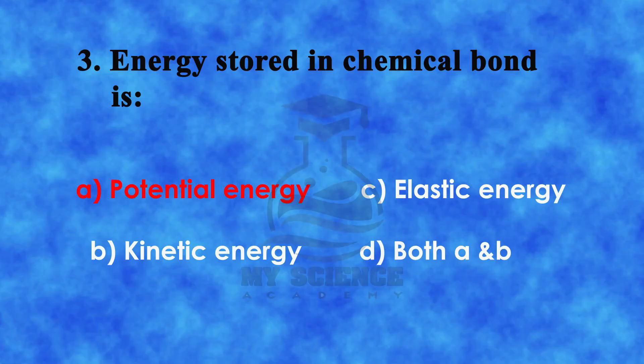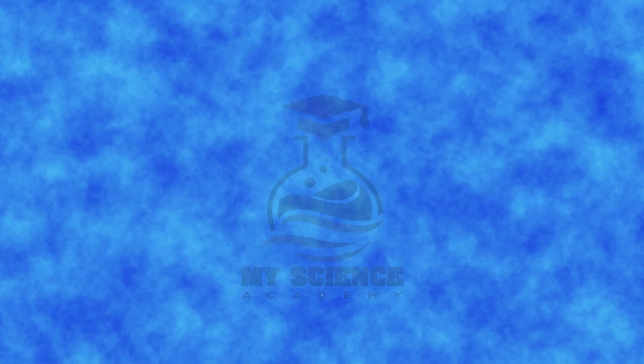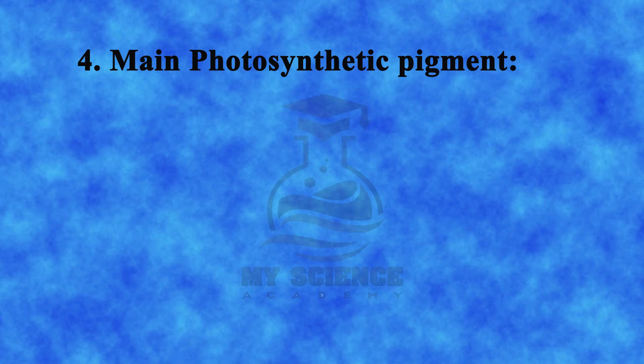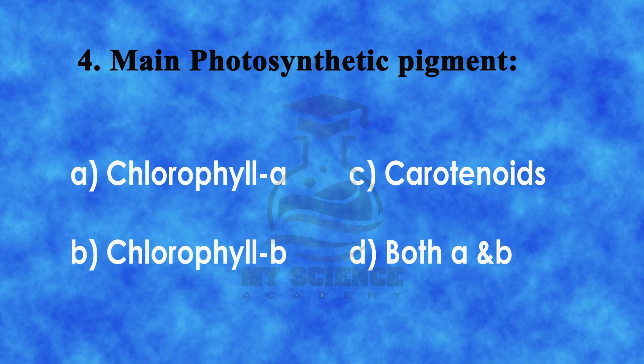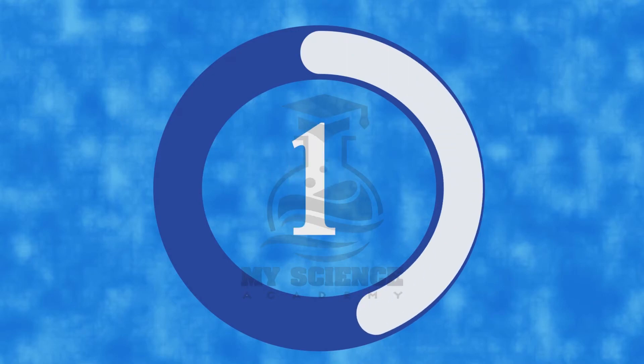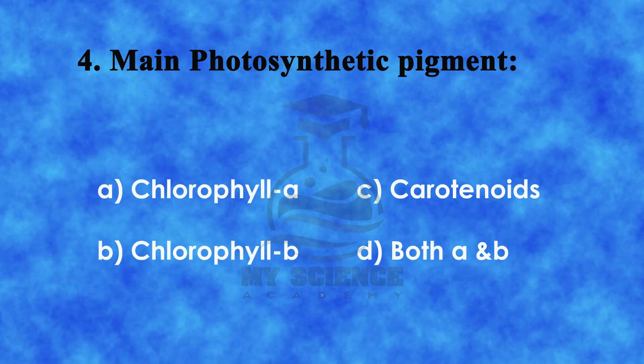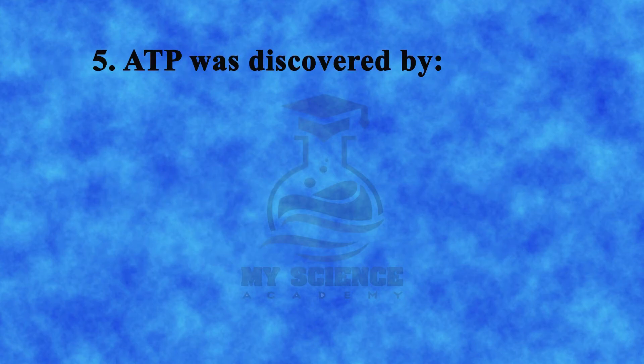The correct answer is a) potential energy. Question 4: Main photosynthetic pigment is: a) chlorophyll a, b) chlorophyll b, c) carotenoids, or d) both a and b. Correct answer is a) chlorophyll a. Question 5: ATP was discovered by: a) Schwann, b) Darwin, c) J. Purkinje, or d) Lohmann.